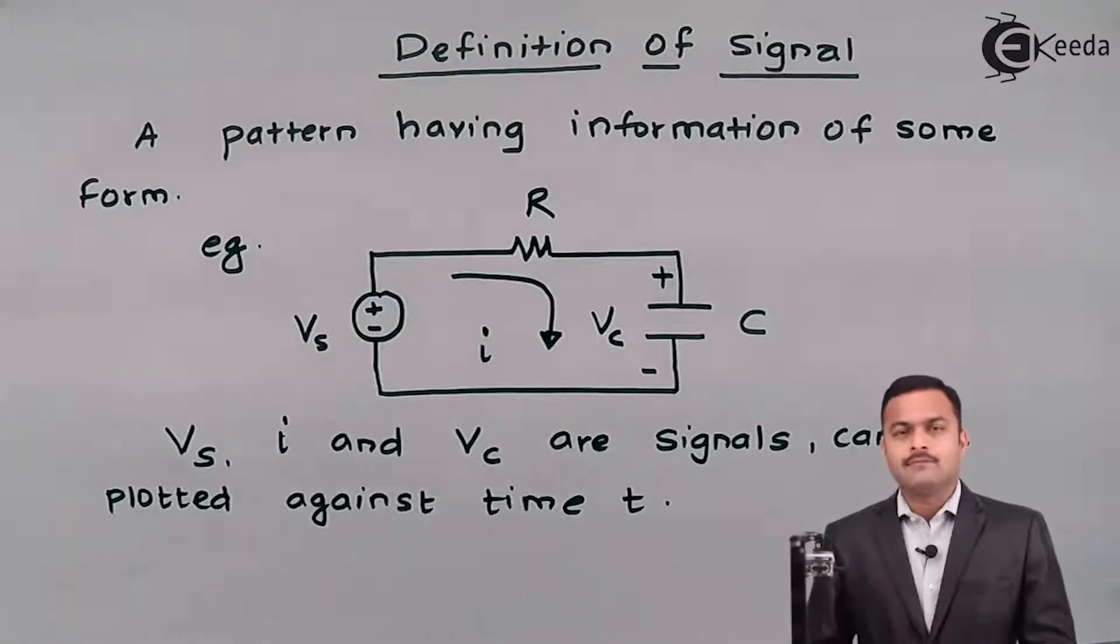So here we have taken an example of electrical system. It is not necessary that signal can only be represented in electrical system - it could be in a biological system, it could be in any other physical system as well.